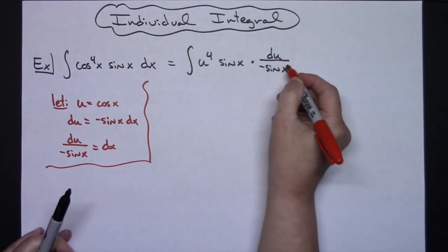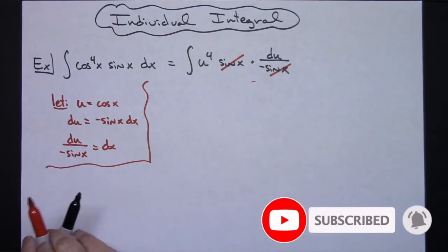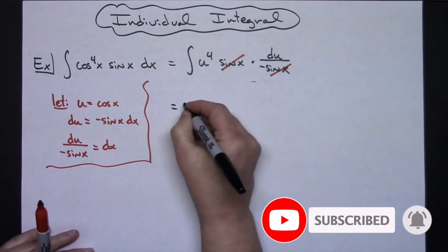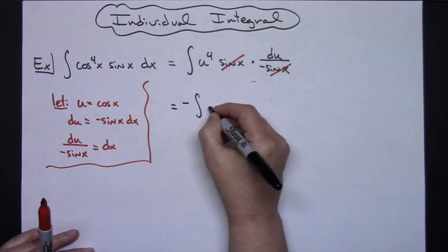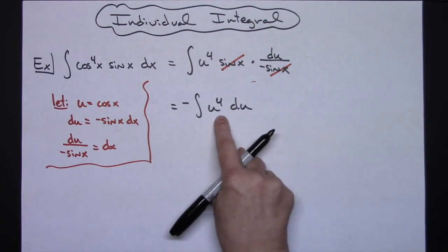That's going to allow those sine x's to cross out. We're also going to be able to take that negative and pull it out in front. So we'll have a negative the integral of u to the fourth du and then that's going to be a straight integration right there.